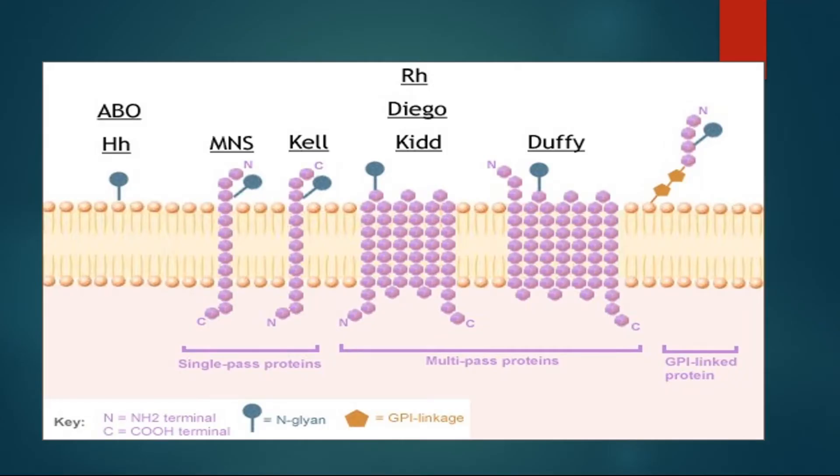As you know, the cells have many substances, but the substances that induce the immune reaction in the body are called antigens. Based on these antigens, we have made two types of blood grouping systems: ABO blood group system and Rh blood group system.